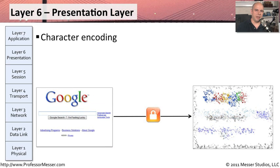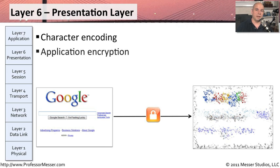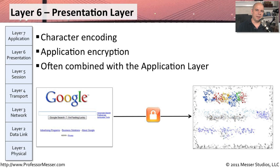The presentation layer of the OSI model, Layer 6, is responsible for putting information into a format that human beings are able to read. If everything were raw binary on screen, it would be difficult to understand. This layer handles character encoding, encrypting information, and decrypting information so we're able to view it. We often combine this layer with Layer 7, because a lot of things associated with how an application works operate at a combination of these two layers together.